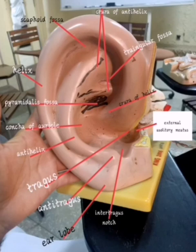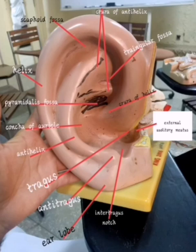Let's revise all the structures: helix, anti-helix, tragus, anti-tragus, ear lobe, external auditory meatus, inter-tragus notch, triangular fossa, pyramidal fossa, concha, two crura of the anti-helix, and one crus of the helix. I hope that's clear. Thank you so much for watching — subscribe for more.